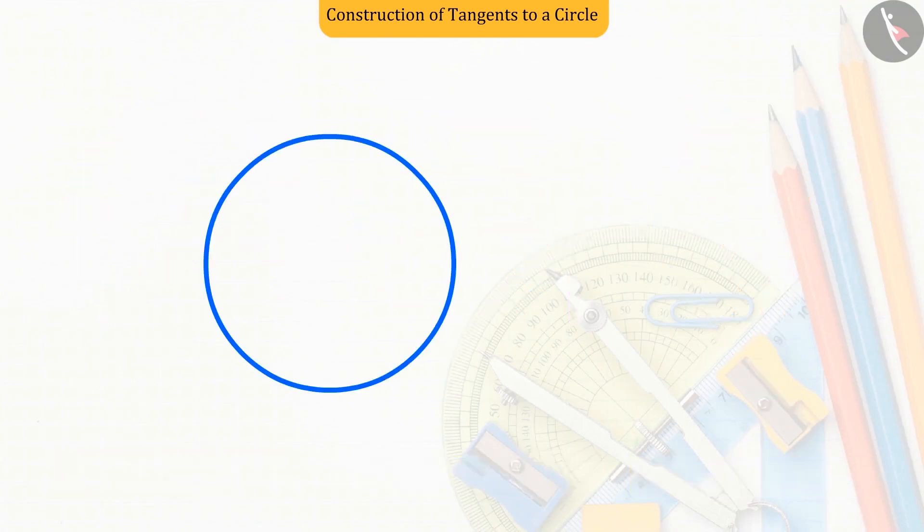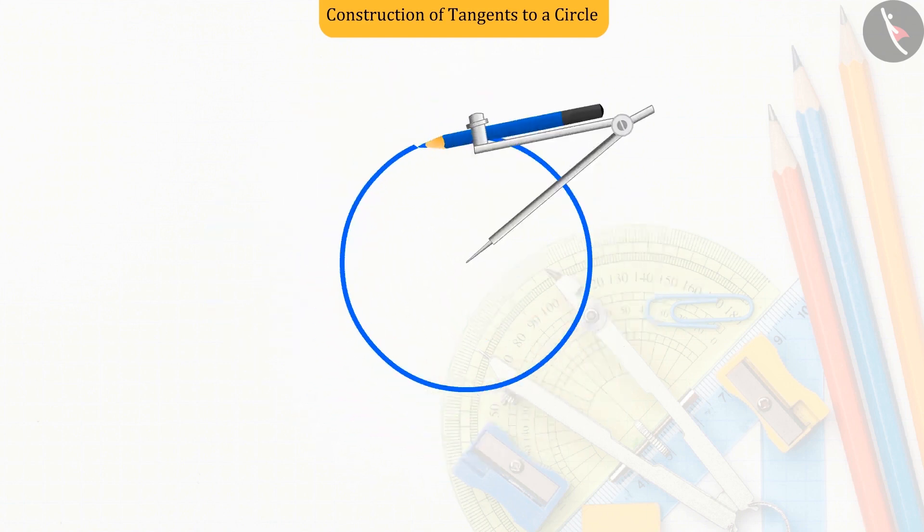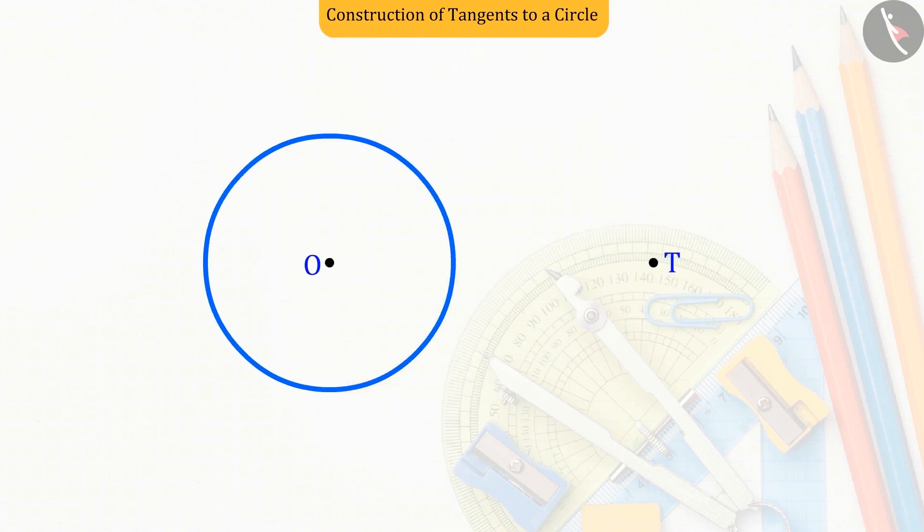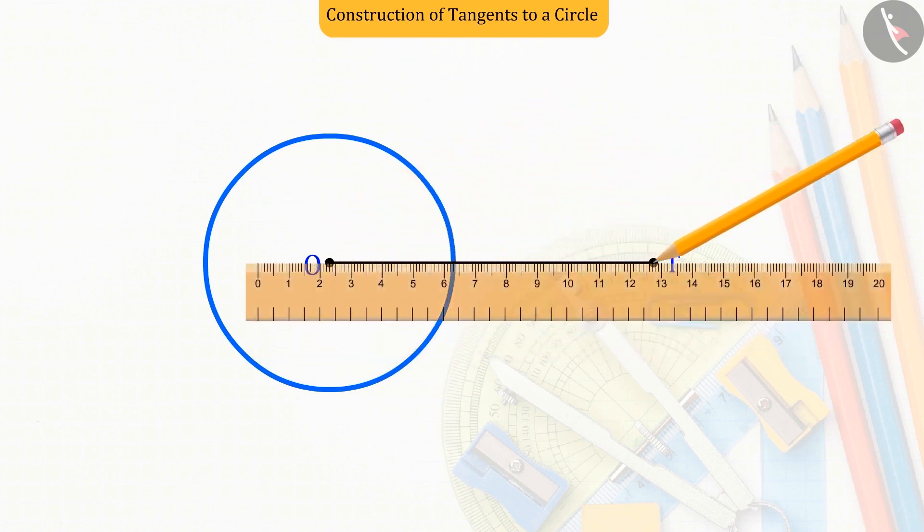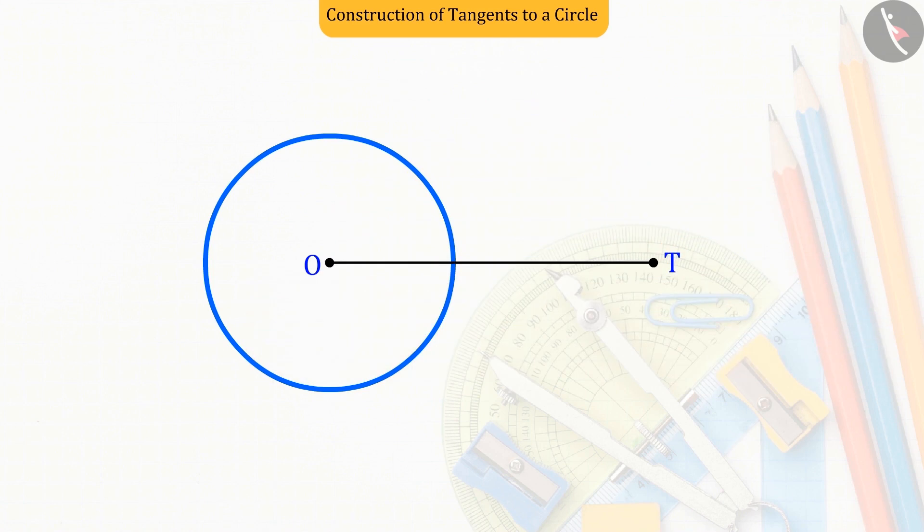Let us now see how tangents can be drawn on a circle from a point outside the circle. A circle whose center is O, let the point outside be T. Tangents are to be drawn on the circle. To do this, first we join the points O and T, which gives us the line segment OT.